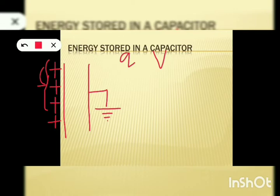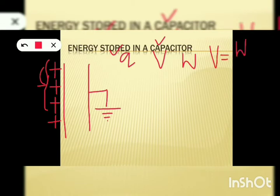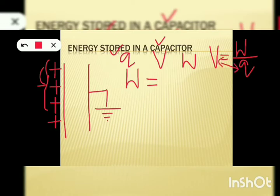How much work is done to charge this capacitor? We had already studied an equation relating charge Q, potential V, and work done in our class 10 physics. That is: potential difference V is equal to work done W divided by Q. From this expression, we can easily find a formula for work done: W equals Q into V. This is the expression for work done in charging the capacitor. Now suppose we give a very small charge to the capacitor.